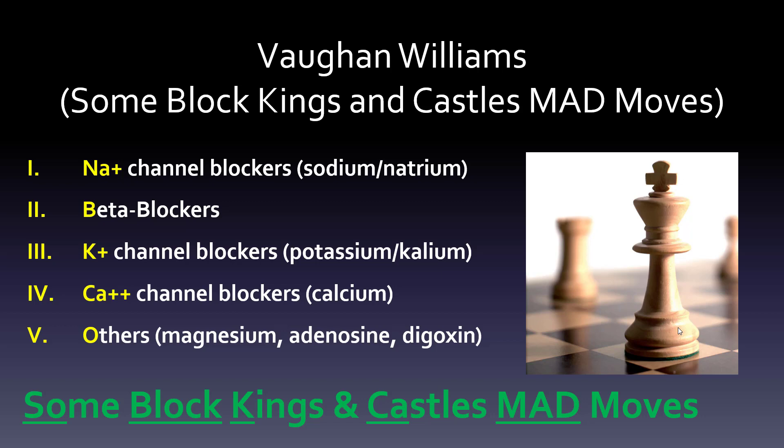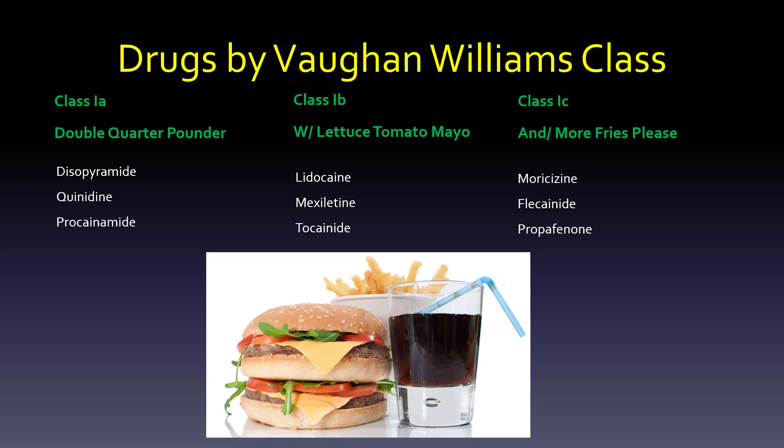Some students have to remember all of the drugs within the classes. Class 1 is divided into 1A, 1B, and 1C. A traditional way to remember this is 'double quarter pounder with lettuce, tomato, mayo, and more fries, please.' Class 1A is disopyramide, quinidine, and procainamide — that's the double quarter pounder. Lettuce, tomato, mayo is class 1B: lidocaine, mexiletine, and tocainide. And class 1C — more fries, please — is moricizine, flecainide, and propafenone.